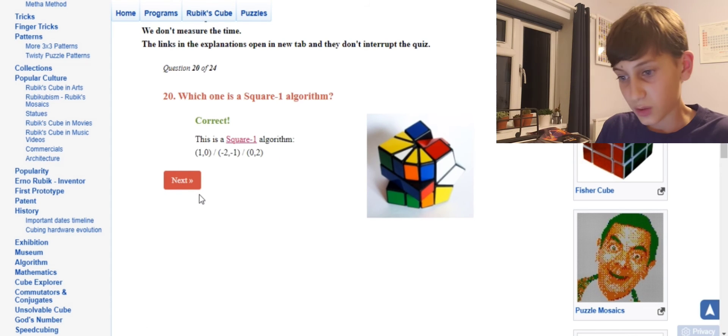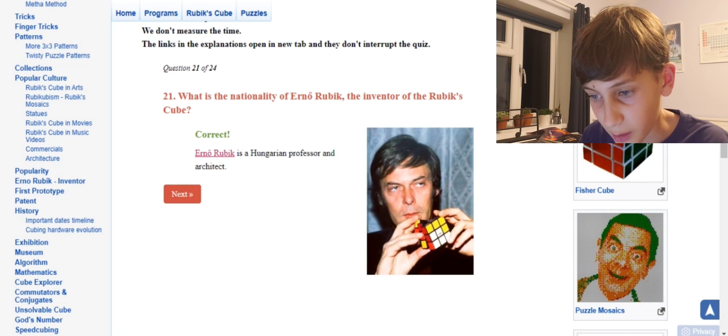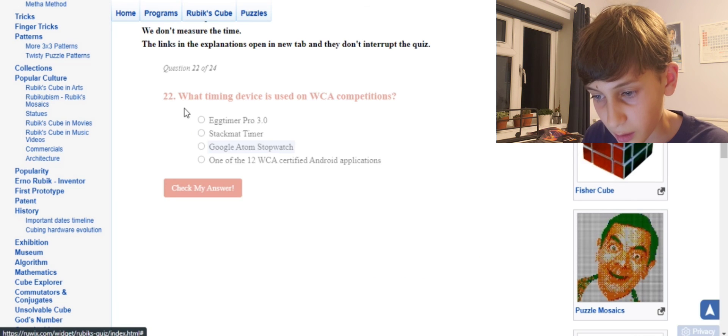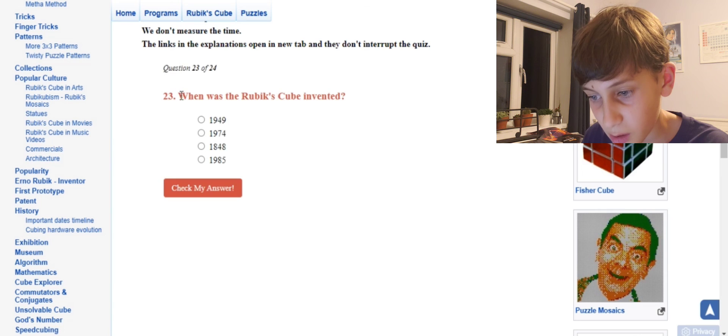What's the nationality for Ernő Rubik? He's Hungarian. Okay, I know Rubik, yes. Okay, Stackmat timer. Everyone knows that. Check my answer, correct.